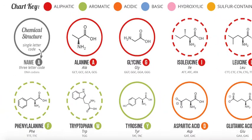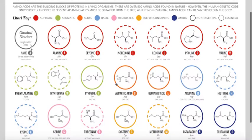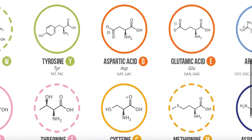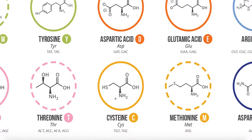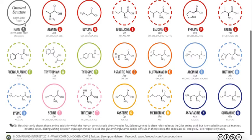Of the 19 chiral amino acids, 18 are in the S conformation and one is R. The one that is R is cysteine. The reason cysteine is R is because it has a sulfur, which has a high priority in the Cahn-Ingold-Prelog rules, and that gives it the R designation. The rest of the chiral amino acids — threonine, tyrosine, and so on — are S.